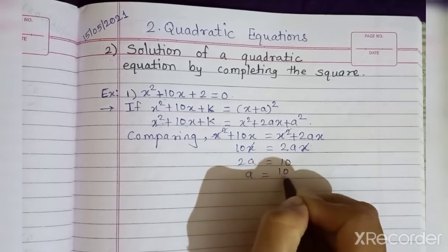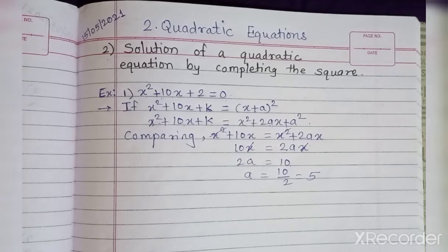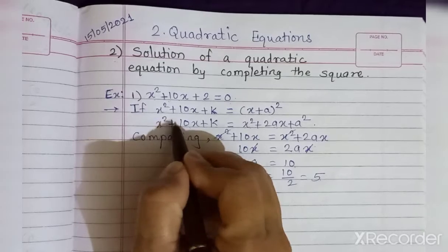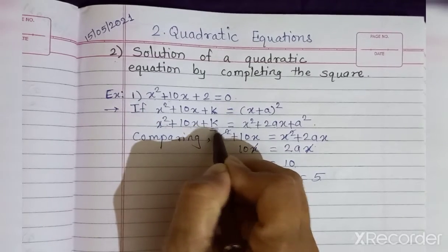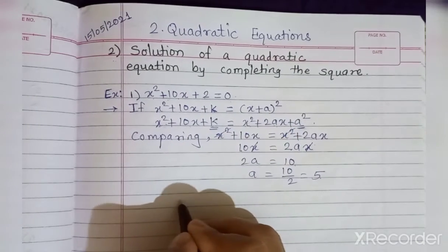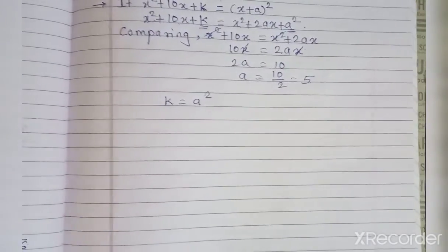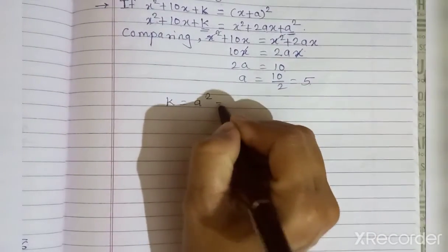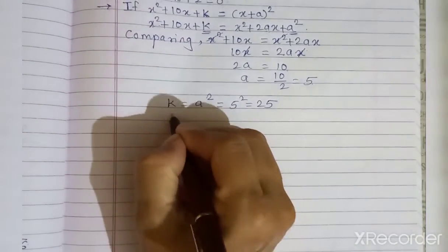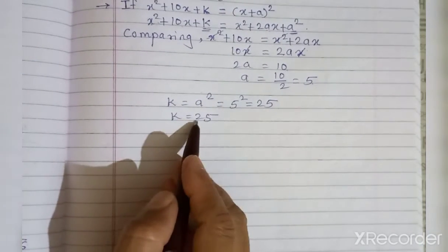From 2a = 10, therefore a = 10/2 = 5, so the value of a is 5. Now in the left-hand side the third term is k, and in the right-hand side the third term is a². So we can write k = a² = 5² = 25. Therefore k = 25.